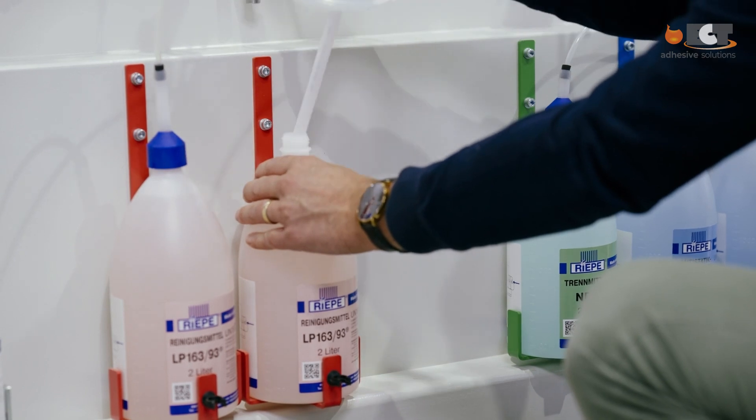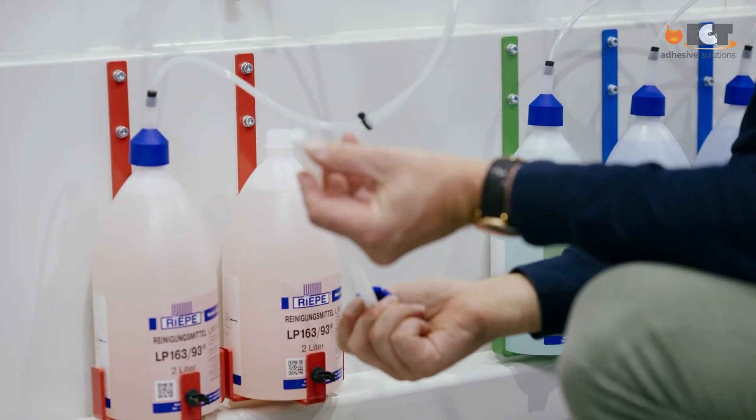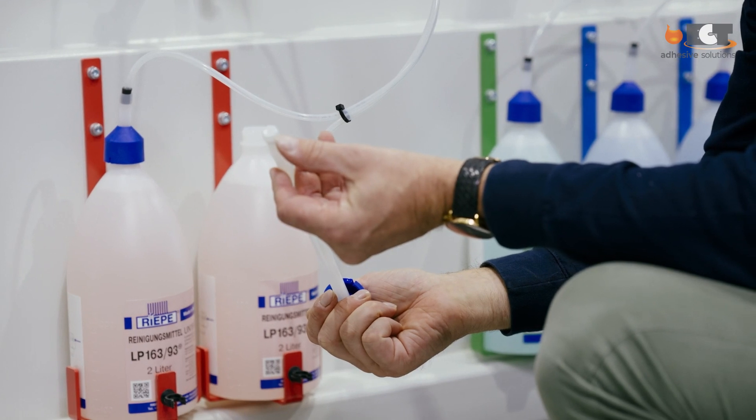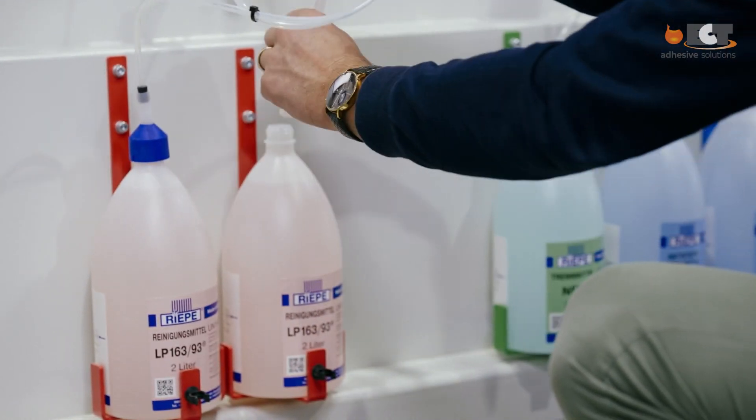You can take the riser tube out of the container and check whether the sieve valve is intact, ensuring no dirt can get into the nozzle. Lastly, you can knock on the non-return valve with a metallic object.